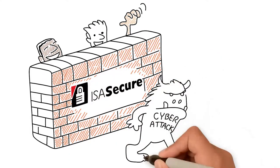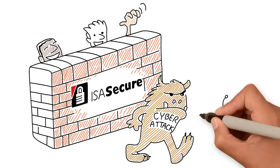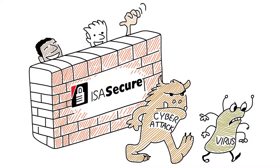ISA Secure also independently verifies control system security capabilities based on the IEC 62443 standards.